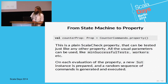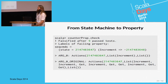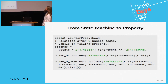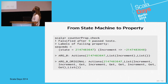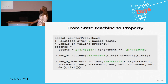We get this counter property and we can check it like any ScalaCheck property. And it fails. The reason is quite simple — for example, we try to increment the max value of the integer type and it rolls over, giving us a negative number instead.